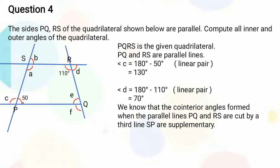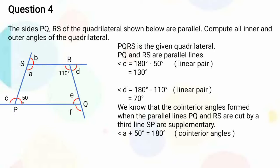We know that the co-interior angles formed when the parallel lines PQ and RS are cut by a third line SP are supplementary. So angle A plus 50 degrees is equal to 180 degrees. Angle A equals 180 degrees minus 50 degrees, that is equal to 130 degrees.